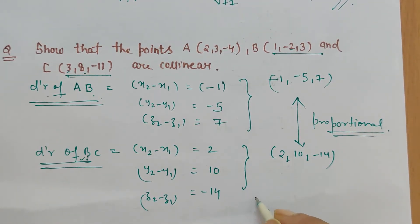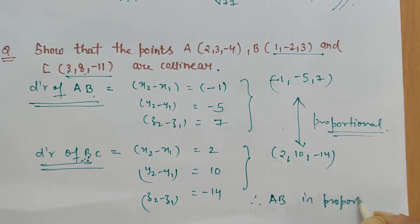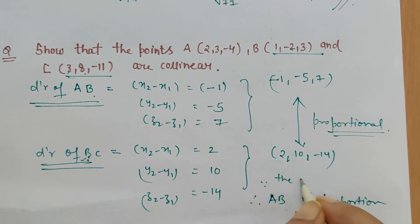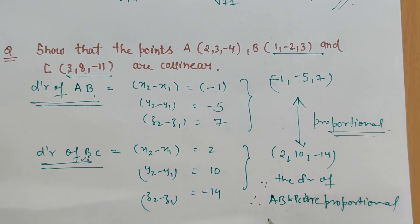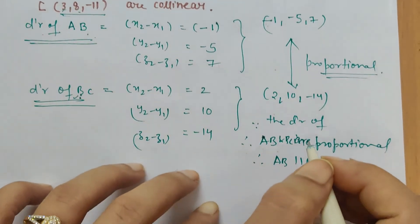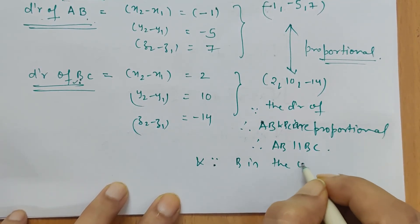So we have to write: Since the direction ratios of AB and BC are proportional, therefore AB is parallel to BC. And since B is the common point...